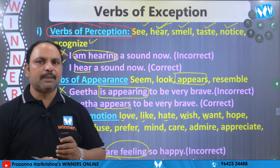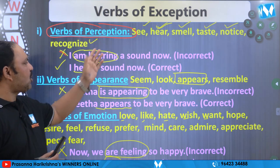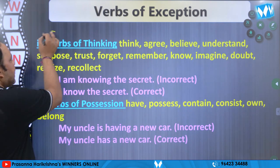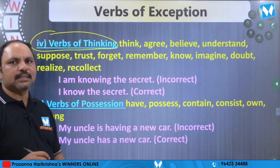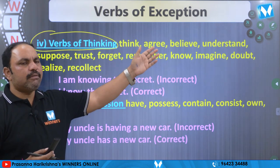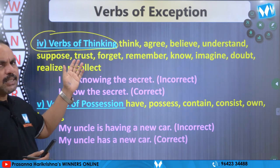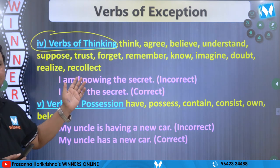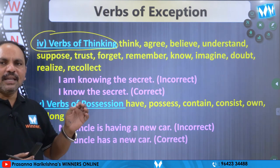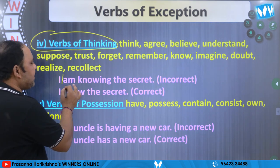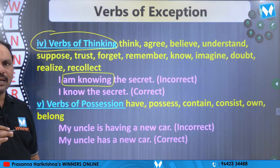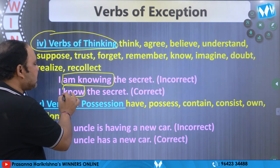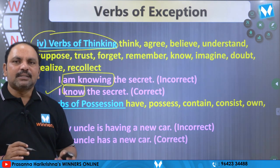Idhi moodu types of verbs ni purracheppukunnadaa: verbs of perception, verbs of appearance, verbs of emotion. Ika fourth type: verbs of thinking — think, agree, believe, understand, suppose, trust, forget, remember, know, imagine, doubt, realize, and recollect. E verbs ni verbs of thinking antaamu. Udaharana: 'I am knowing the secret' — am knowing ane di thappu, ikkada present continuous lo undi. Simple present tense lo vaadathe correct: I know the secret.